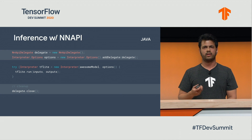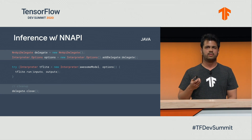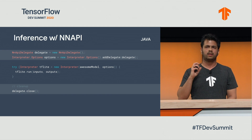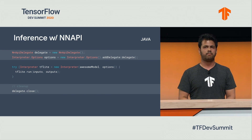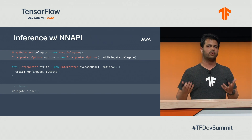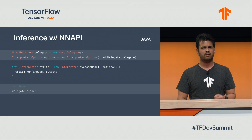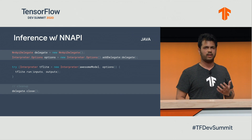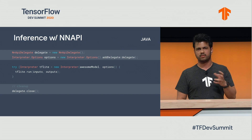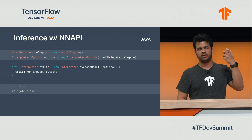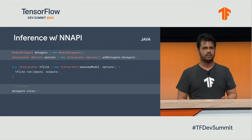This is how you would typically run inference with the NNAPI delegate using our Java interface. The main idea is that you initialize the delegate instance, and you pass it on to our interpreter. And the rest of your business logic remains pretty much the same. There is not much else you have to do for delegates apart from just these couple of lines of initialization and cleanup at the end.